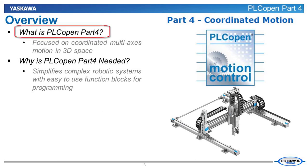So first of all, what is PLCopen Part 4? It is a subsection of the PLCopen specification that focuses on coordinated multi-axis motion that takes place in 2D and 3D space. Simply put, the specification outlines how multi-axis systems should be controlled.